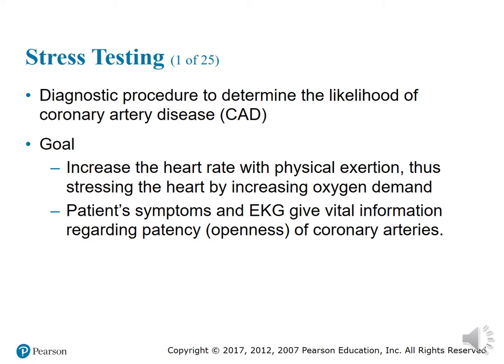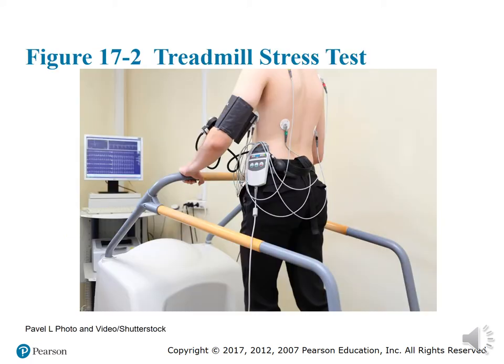Here is typically what a treadmill stress test looks like. You can see the Holter monitor on the patient's hip, blood pressure is being measured, EKG leads are placed on the back, and if you look closely under the arms, the leads are on the chest just like a regular EKG.